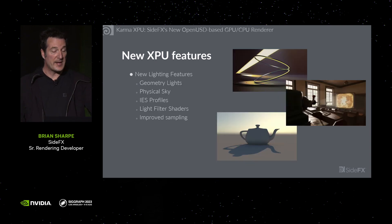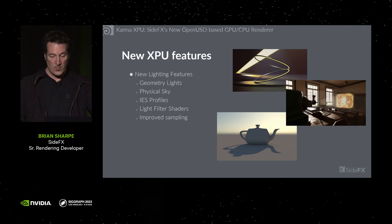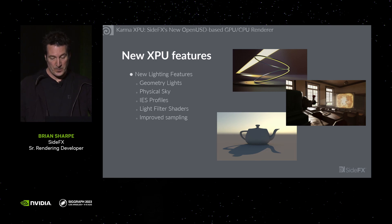We've improved lighting. We've added geometry lights and also a physical skylight, which is like a procedural dome light that simulates a physically correct sky — with it you can achieve sunsets on the horizon and such. We've added IES profiles and also light filter shaders, which are shaders that can be attached to light sources, as can be seen with this projector. We've also improved sampling across the board, meaning lighting overall is more efficient.